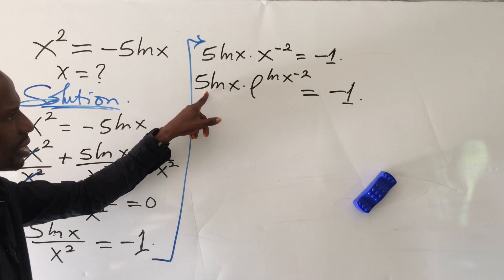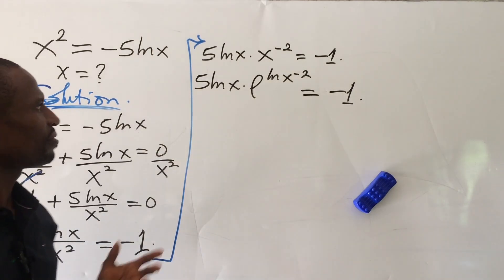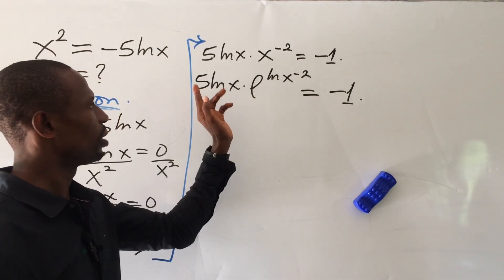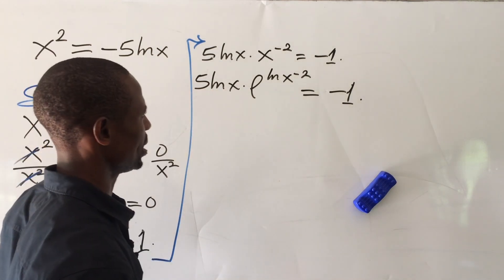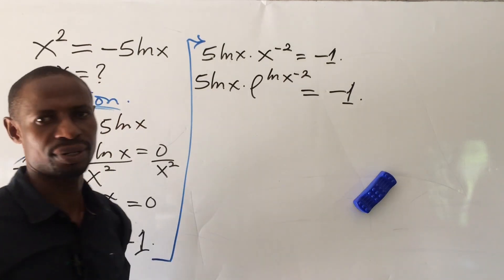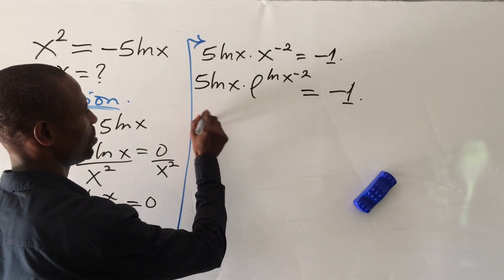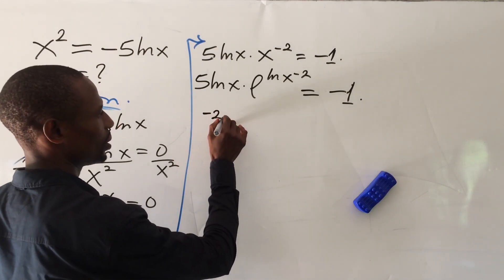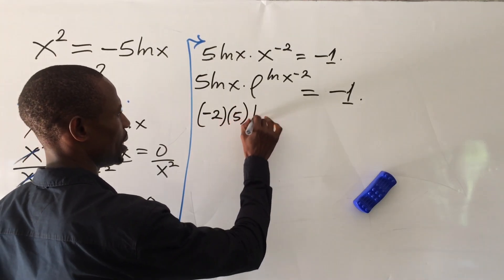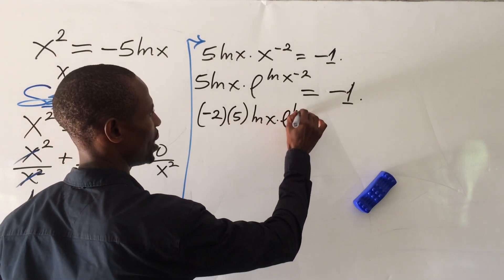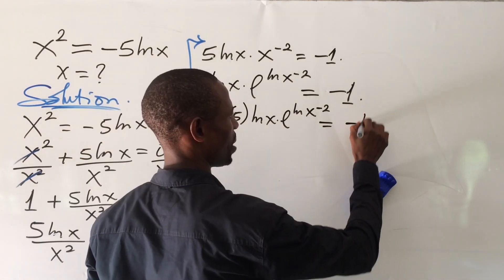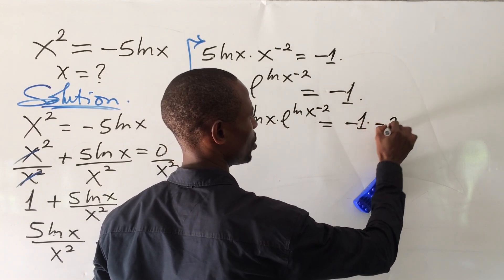Now, 5 is a prime number so there's no way to simplify it to bring out the 2. What we do here is multiply both sides of the equation by minus 2. So we have minus 2 times the bracket of 5 times ln(x) times e to the power of ln(x) to the power of minus 2, equal to minus 1 times minus 2.